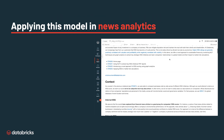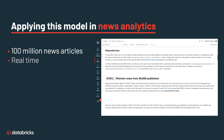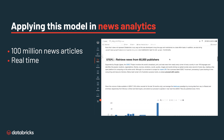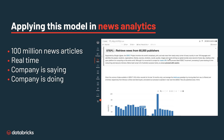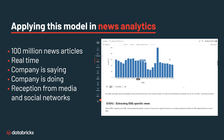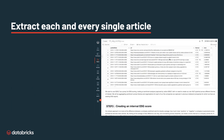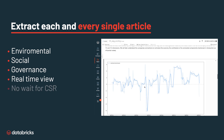By applying this model in news analytics, we show you how to bring 100 million news articles in real-time to understand not only what a company is saying, but also what a company does. Additionally, we also find what the reception was from the media and social networks. With news and media analysis as a proxy, we show you how to extract each and every single article across the E, the S, and the G, and bring that real-time view of ESG instead of waiting for year-long CSR disclosures.